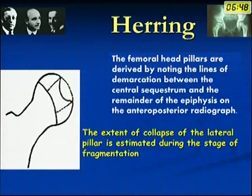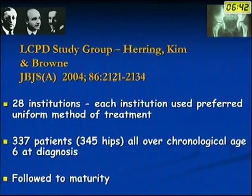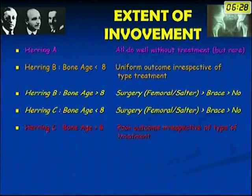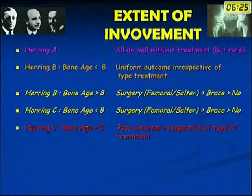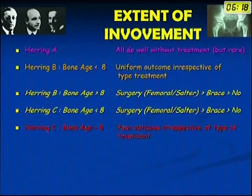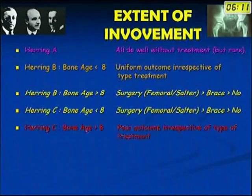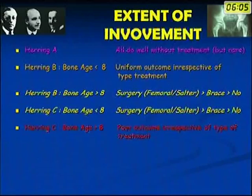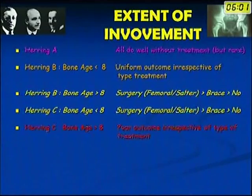The Herring classification estimates the extent of collapse of the lateral pillar during the stage of fragmentation. In a prospective study by Herring et al. in 337 children with 345 hips followed to skeletal maturity, they concluded: Herring A all do well without treatment. Herring B with bone age below 8 years shows uniform outcome irrespective of treatment. Herring B above 8 years and Herring C below 8 years — surgery gives better results than a brace, which gives better results than no treatment. Herring C after age 8 gives uniformly poor results.